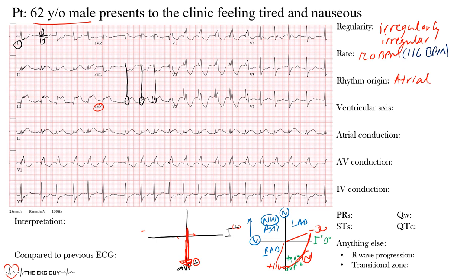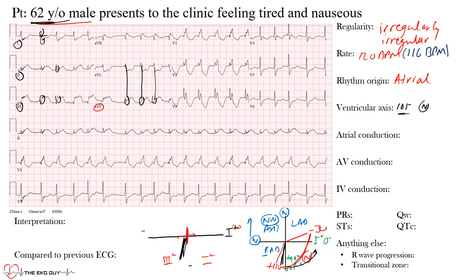Another way to look at this: lead II sits at positive 60 degrees and lead III at positive 120 degrees. Comparing them, lead III appears more positive than lead II, so the axis lies further in that direction. The machine gave us 101 degrees — a normal axis, but on the rightward side. As we age, the axis tends to shift more leftward as the left ventricle becomes dominant, so this rightward shift at 101 degrees is something to keep on the radar.